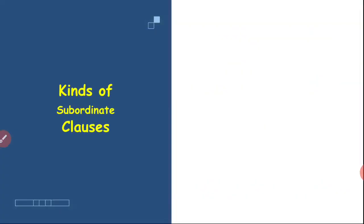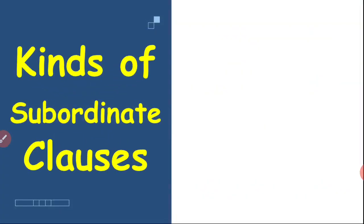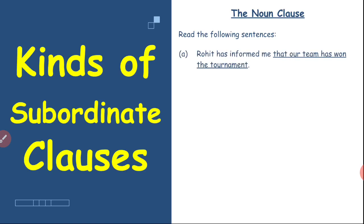Next, we'll see the kinds of subordinate clauses — what kinds of subordinate clauses there are. To understand this, we'll take some examples. The first kind is the noun clause. We'll go through the examples and read the following sentences, then discuss and understand them. There are two sentences on the screen.